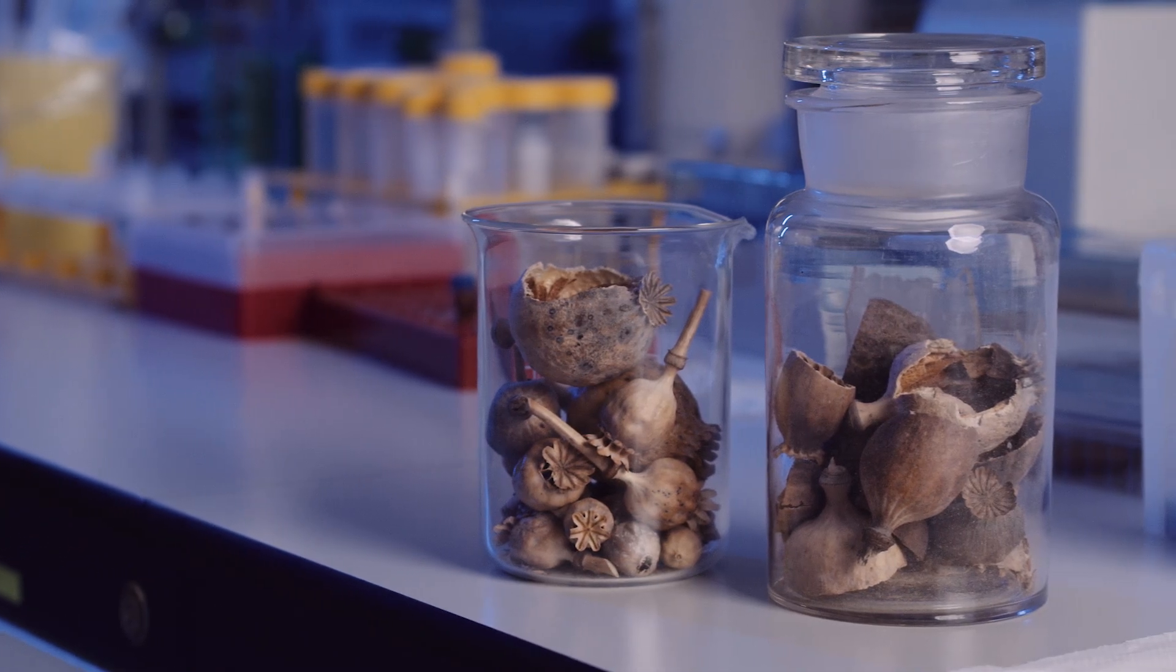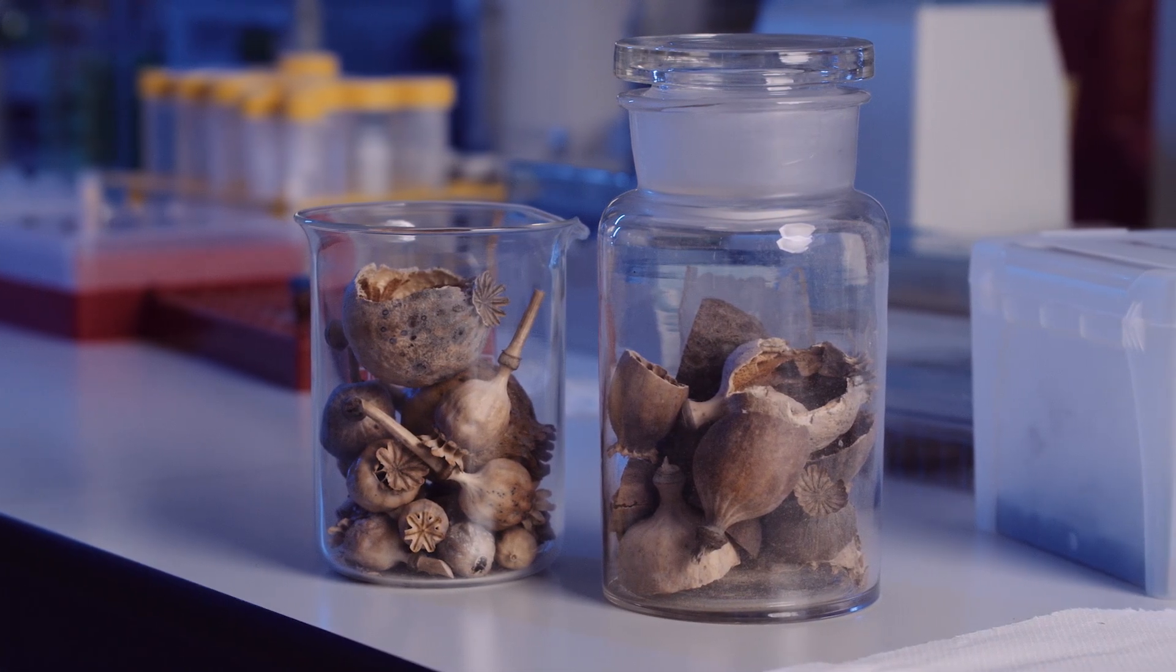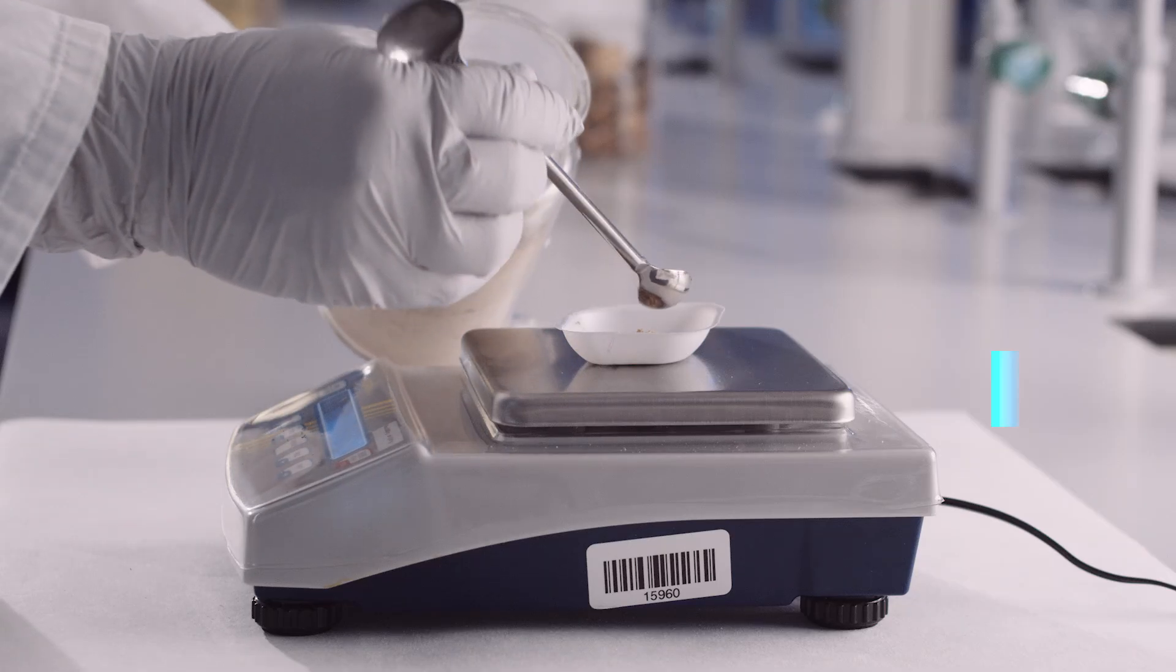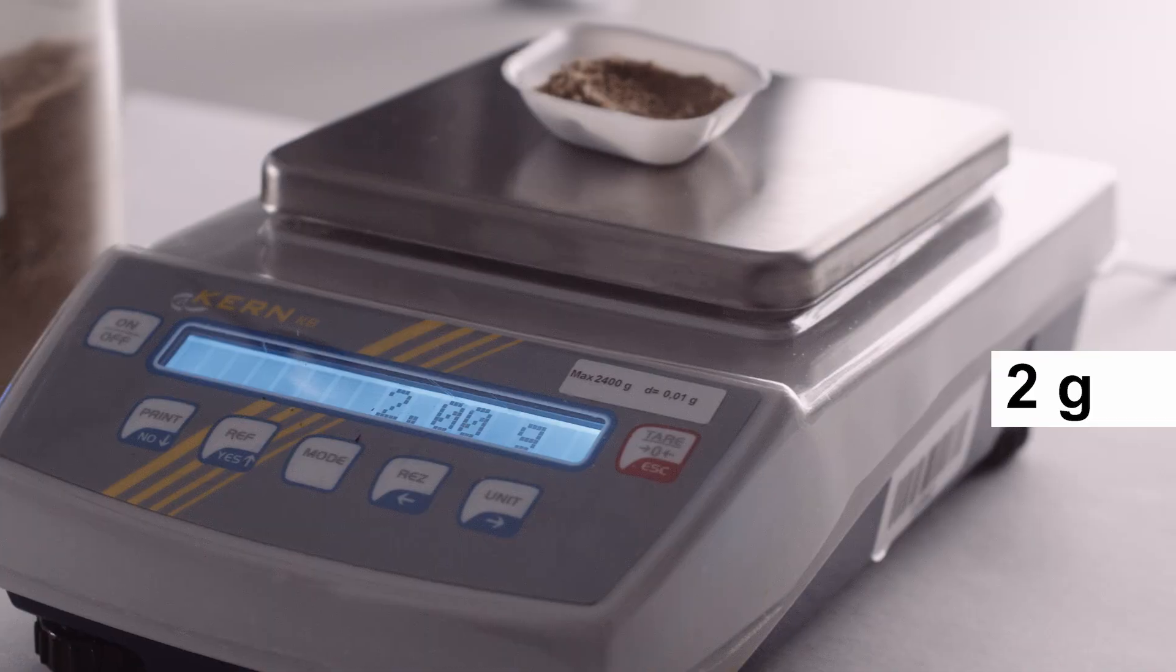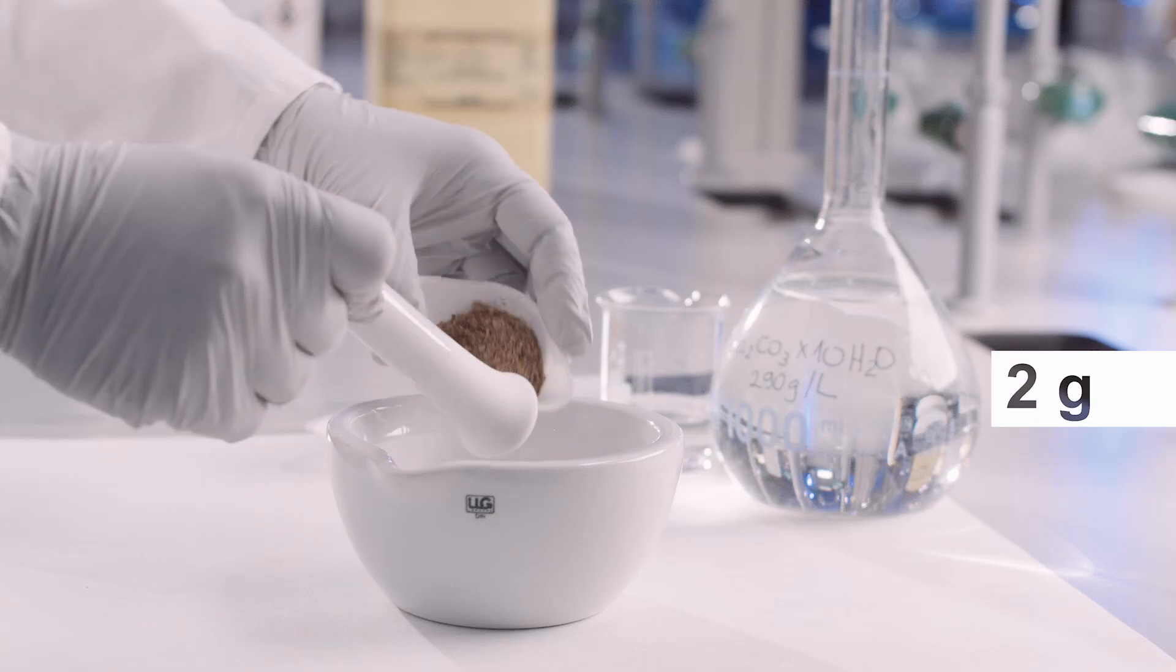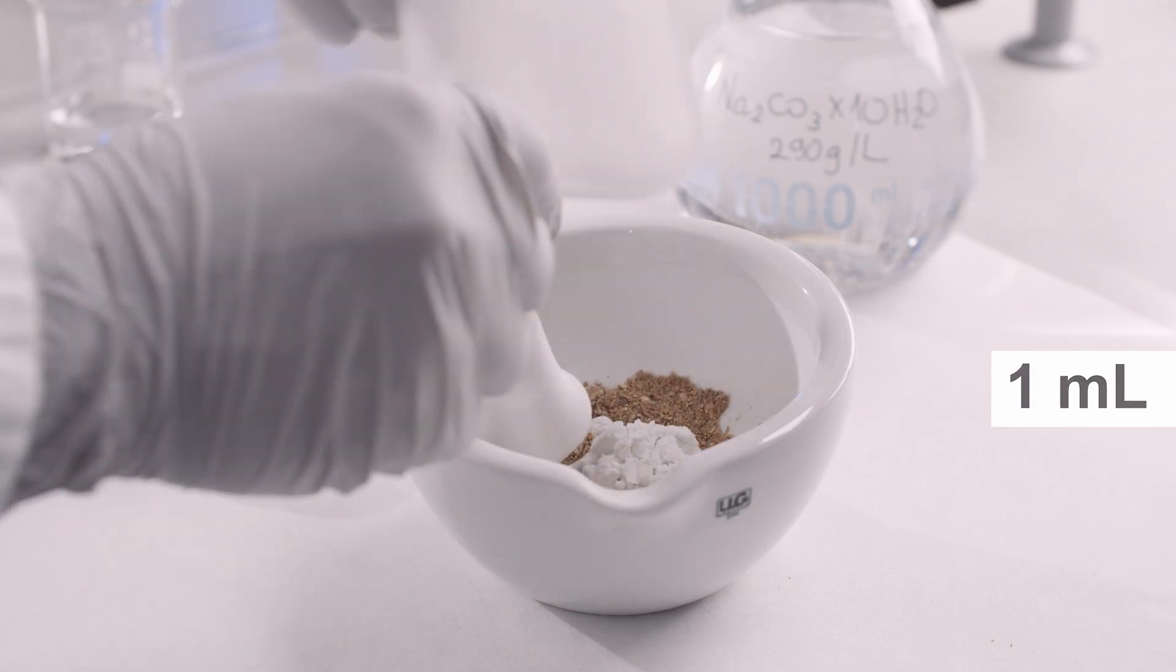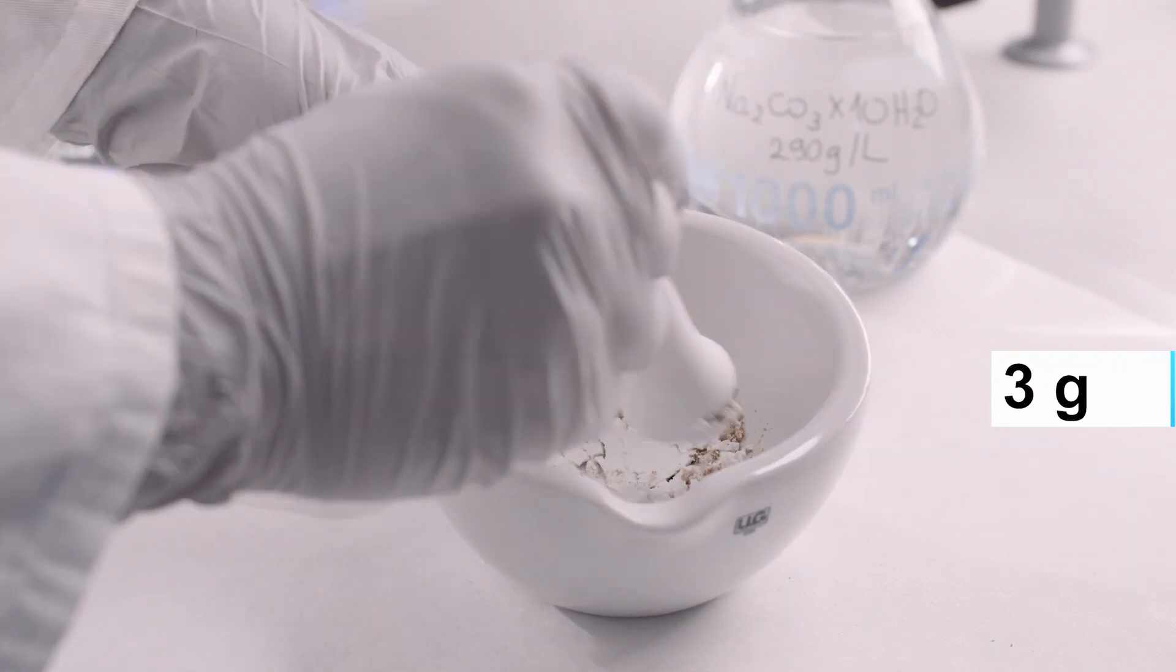The plant material for extracting alkaloids is dried poppy hats, which are a by-product of extracting poppy seeds for consumption. To perform column chromatography, weigh and mix in mortar 2 grams of powdered poppy capsules, 1 ml saturated sodium carbonate solution, and 3 grams of deactivated silica gel.